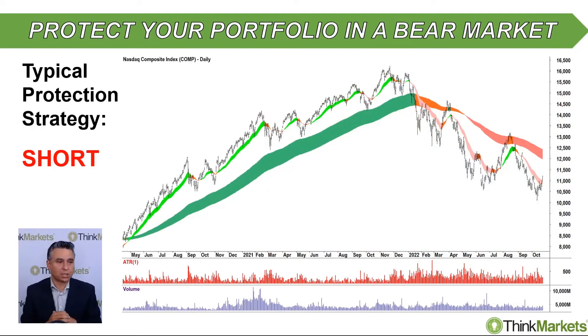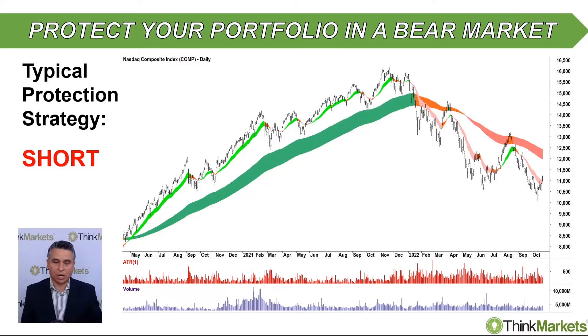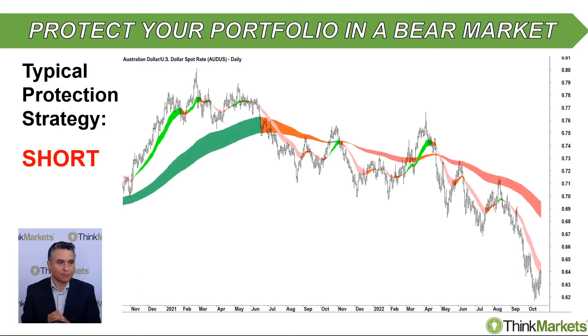A typical protection strategy for your portfolio is to short the index. If your stocks are going down, stocks in your portfolio are going down, the index is probably going down — we can take a short trade on the index to hedge out our risk.